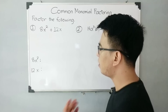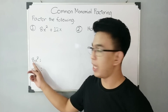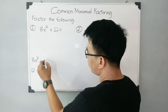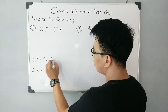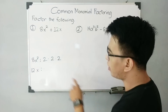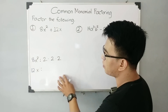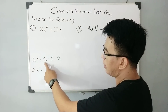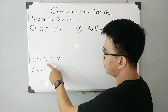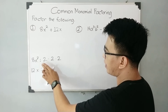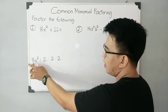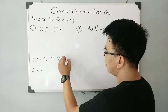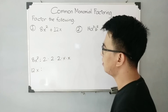We need to find the prime factors of 8 and x squared. For the number 8, you start with 2 times 2 times 2, because those are the prime factors of 8 — since 8 divided by 2 is 4, and 4 divided by 2 is 2. And then for x squared, we can factor it out as x times x.